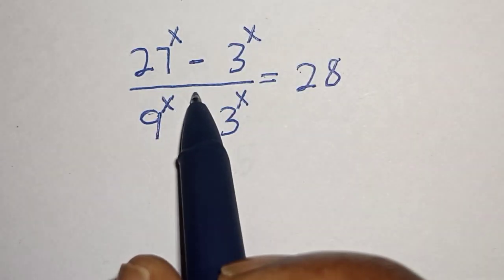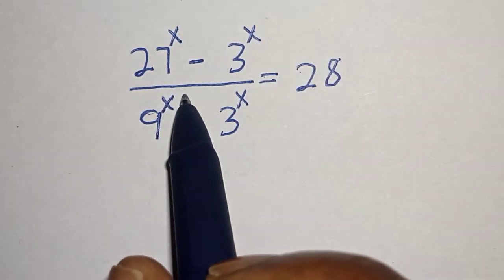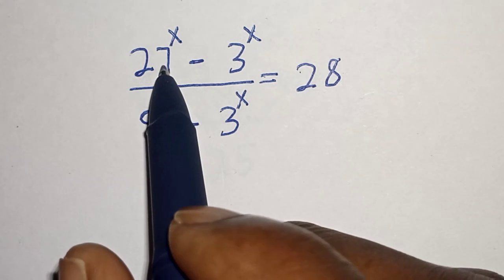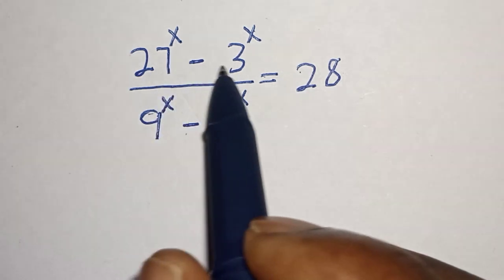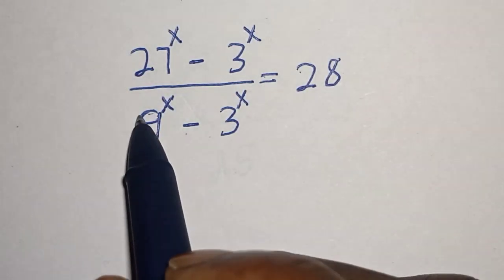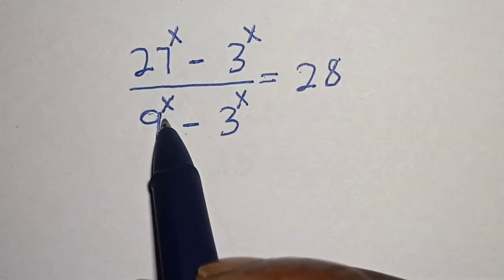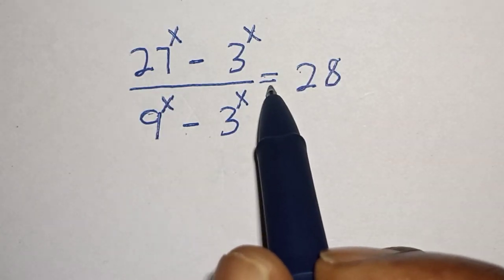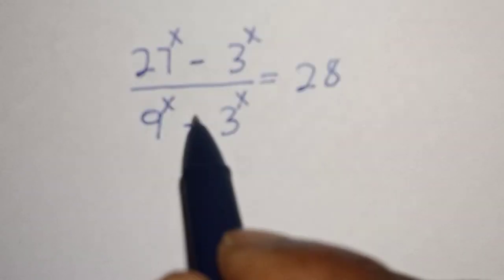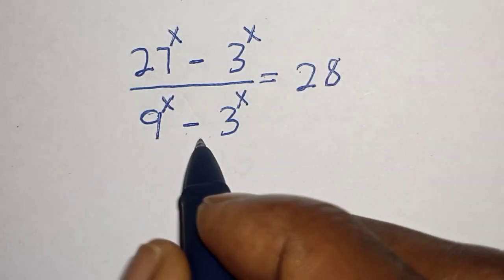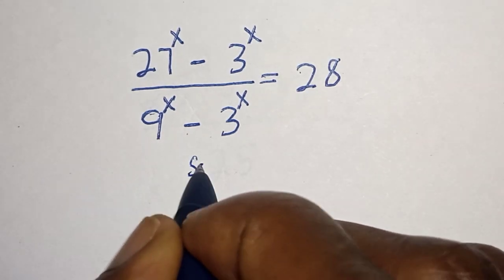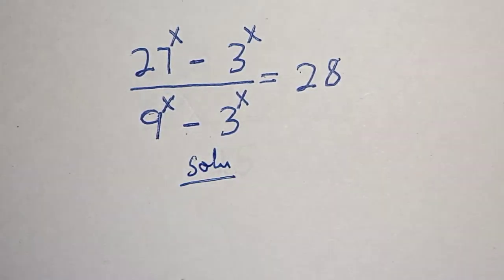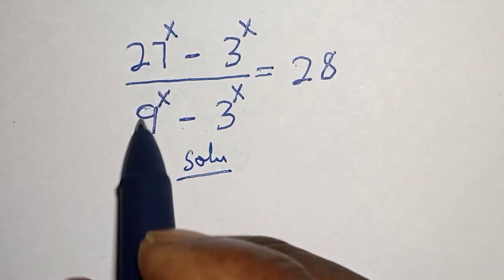Hello, welcome to Magis. In this class we want to find the value of s from this given equation: 27 raised to power s minus 3 raised to power s, divided by 9 to the power of s minus 3 to the power of s, is equal to 28. Like, share, comment and subscribe.